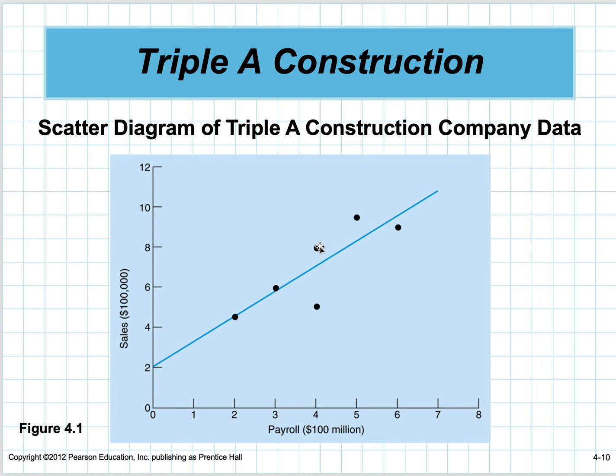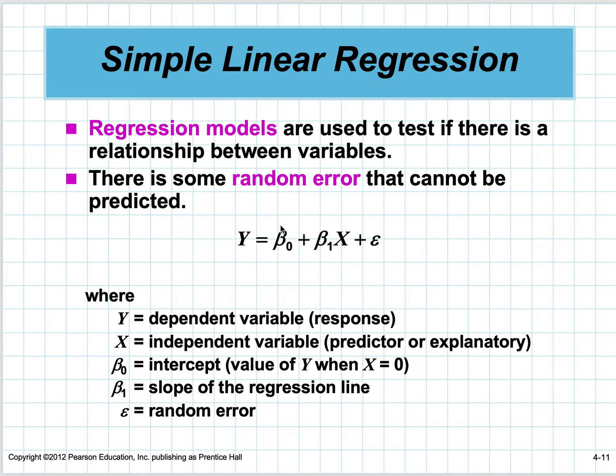We use Greek letters, which means we're looking for the population parameters. So beta zero plus beta one times x plus a little bit of error equals y.